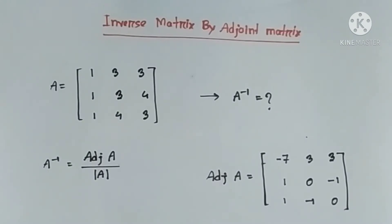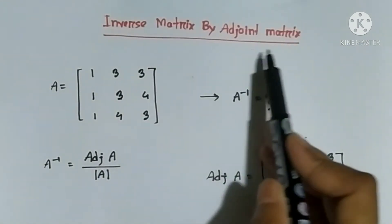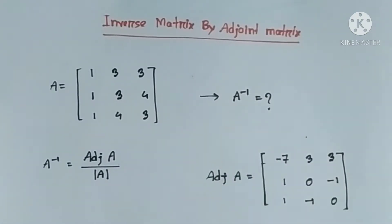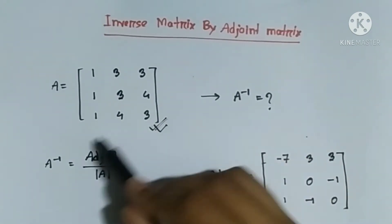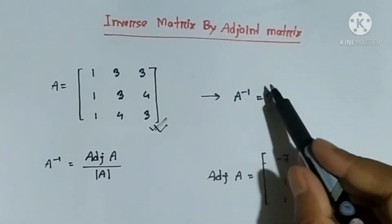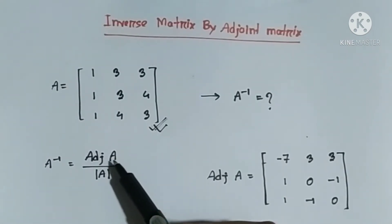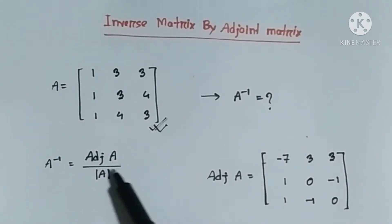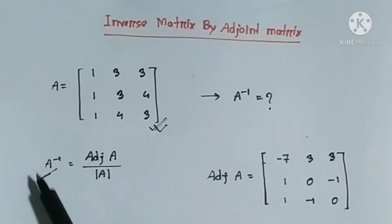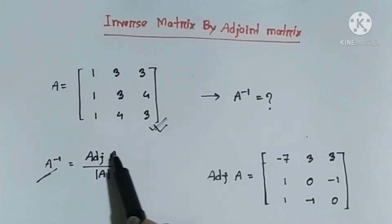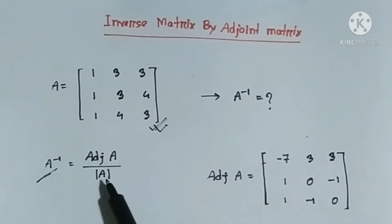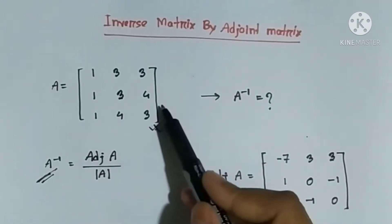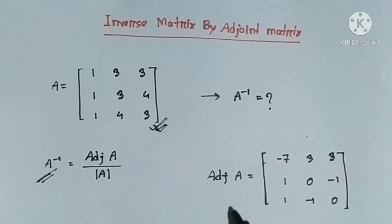Now for the inverse matrix — we already learned how to find the adjoint matrix. To find the inverse matrix, the formula is: inverse of A equals adjoint of A divided by determinant of A. So we need to find the adjoint and then divide by the determinant.